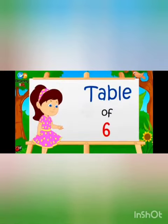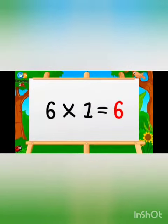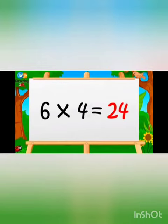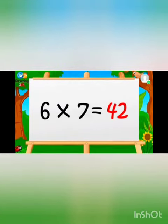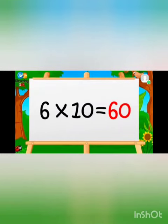Students, we will learn the table of six. Read with me: six ones are six, six twos are twelve, six threes are eighteen, six fours are twenty-four, six fives are thirty, six sixes are thirty-six, six sevens are forty-two, six eights are forty-eight, six nines are fifty-four, six tens are sixty.